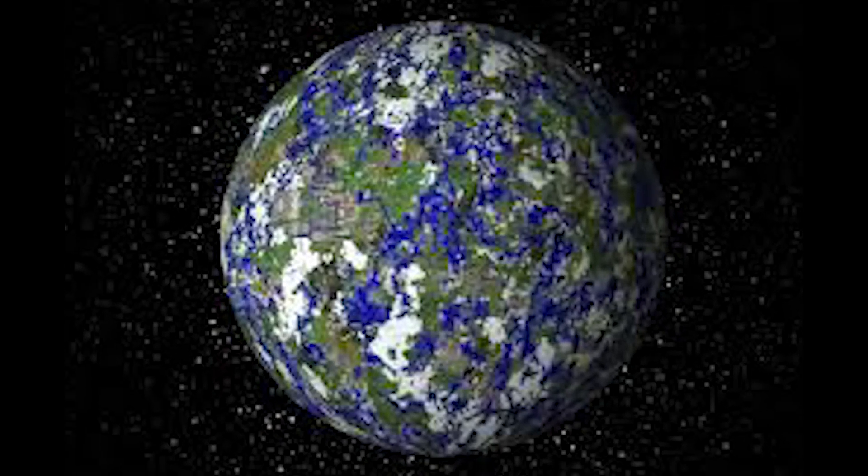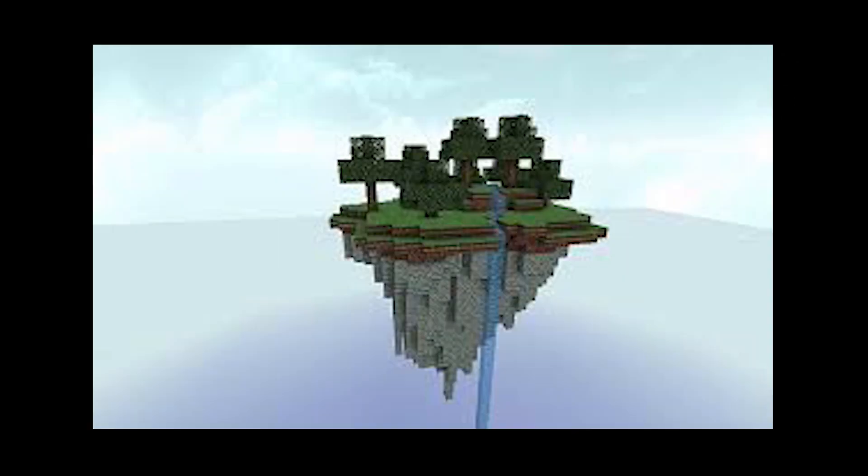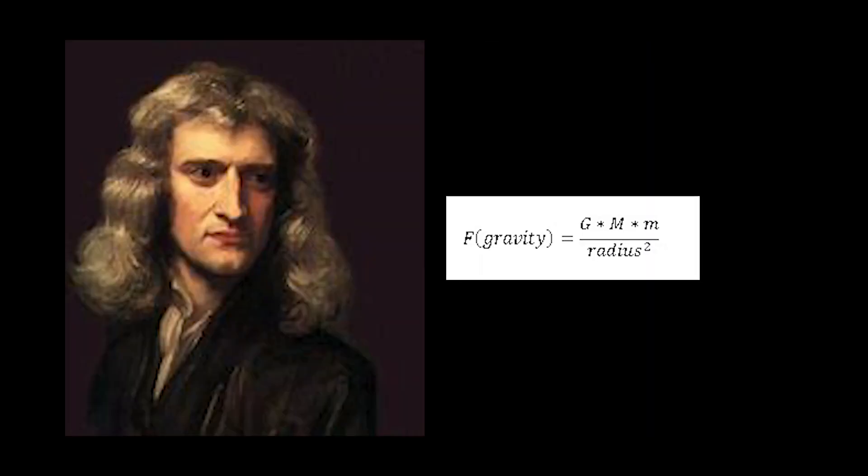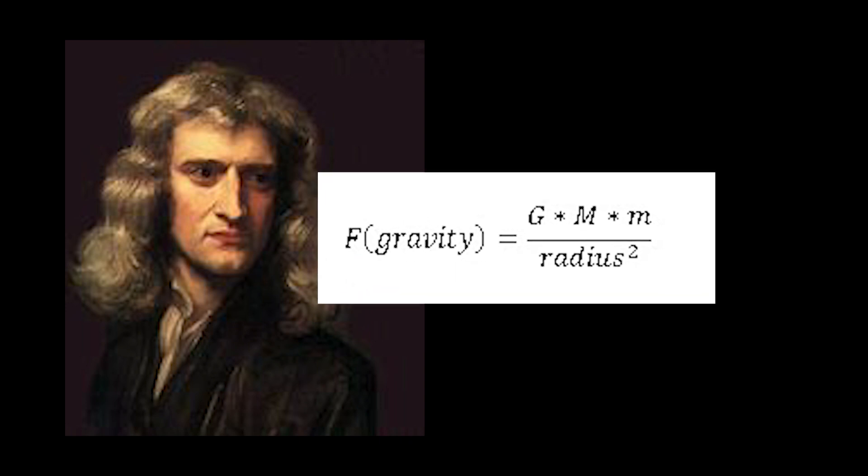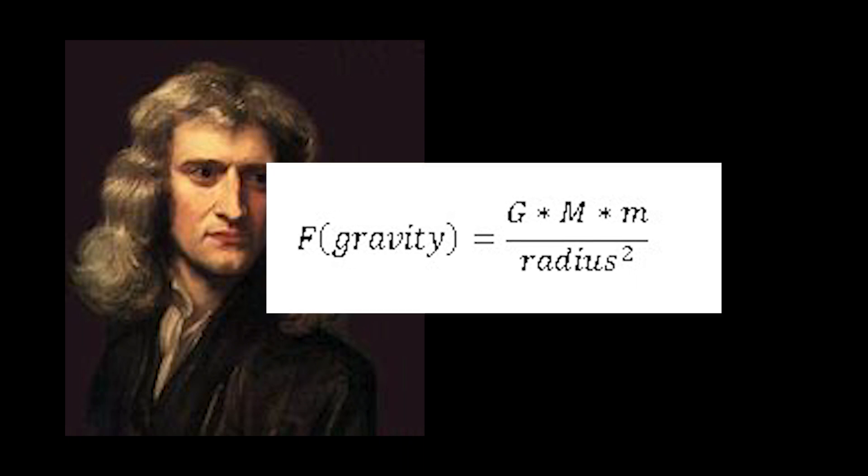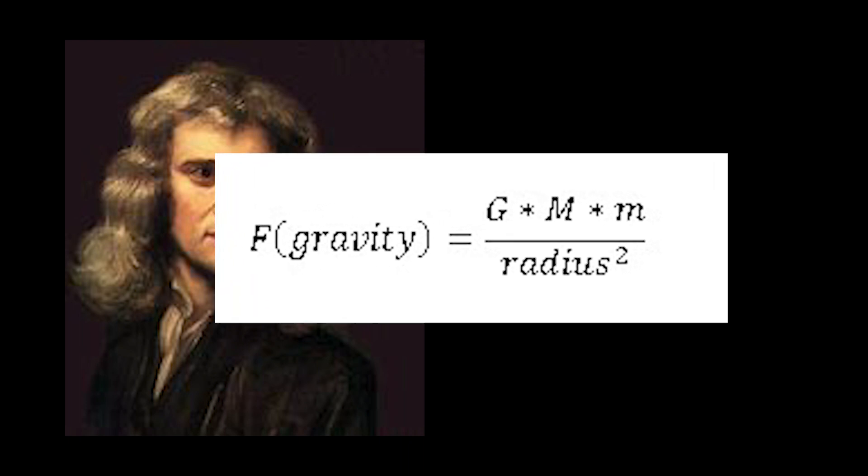One property we know we have is gravity. Objects are attracted to the surface, most of the time at least. So we can use Newton's law of gravitation, that is, force equals the gravitational constant times mass 1, mass 2, all over the radius squared, and we're going to be solving for the big M.